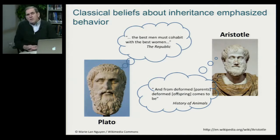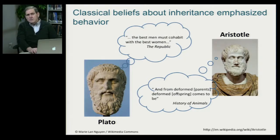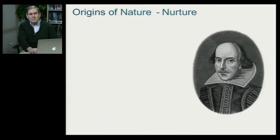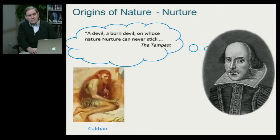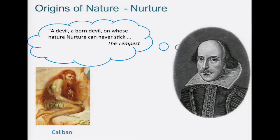The first use of the term nature and nurture to define the debate that had gone on for centuries, millennia, probably owes to the greatest psychologist of all time — someone you may not have heard of in your psychology course, but you know him well — Shakespeare. Shakespeare describes Caliban in The Tempest as a devil, a born devil, on whose nature nurture could never stick. Shakespeare was a hereditarian, and it's never been said better or more beautifully than he said it here.